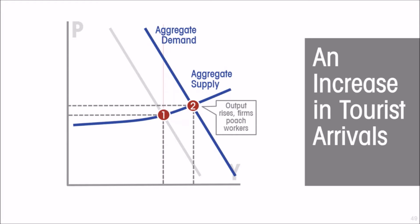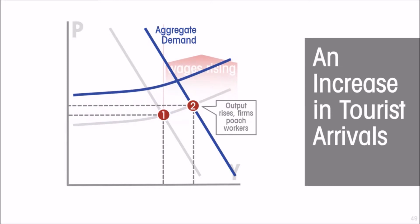Where output is above the full employment level, firms are competing for workers with other firms in the same industry — the tourist industry perhaps — and with businesses in other industries entirely, so there's tightness in the labor market. If we're above the full employment level of output, then there is excess demand for labor. We know therefore that over time wages are going to be rising, and as wages rise that pushes up the cost of production — we show that as the aggregate supply curve shifting upwards.